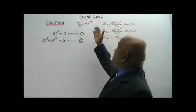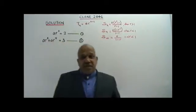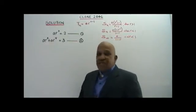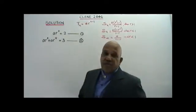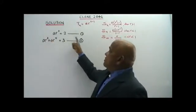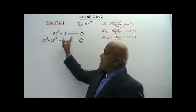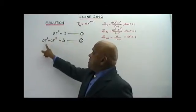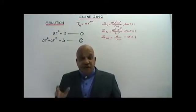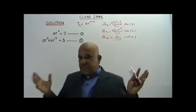Here I have for you a clone question based on the year 2006. You are given that the fourth term of a geometric progression is 2, and the sum of the fourth and fifth terms is 3. I have written it like this — A is the first term, R is the common ratio. This is the fourth term, and this is the sum of the fourth and fifth terms. Part A: you are supposed to find the first term and the common ratio.